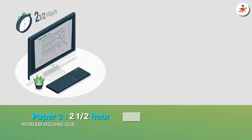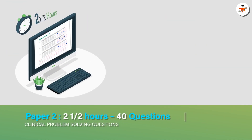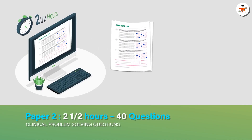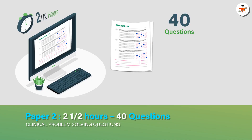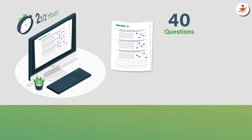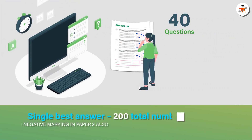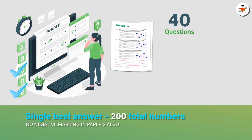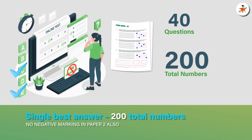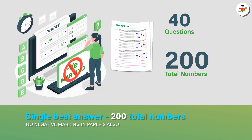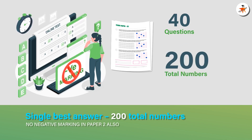Paper 2 consists of two and a half hours of total duration, having 40 clinical questions mainly dealing with clinical problem-solving scenarios. Each question has five answer choices with more than one correct answer. The total marks for this paper is 200, and there is no negative marking in this paper as well.